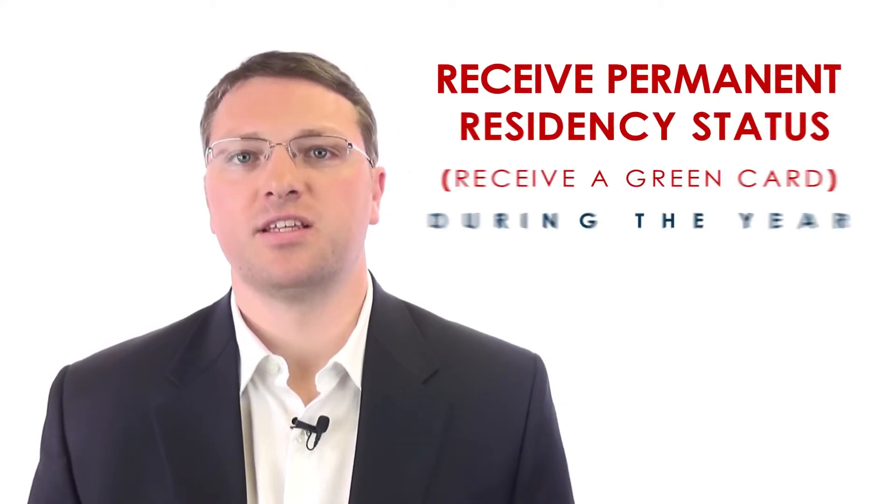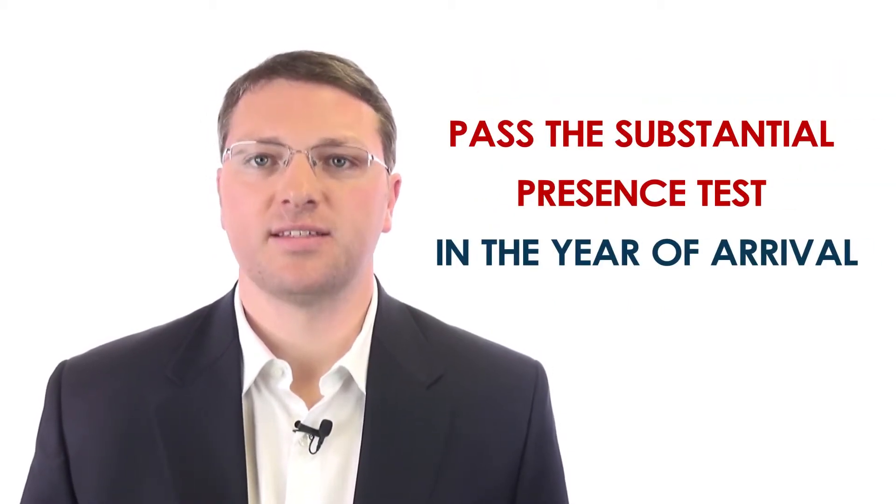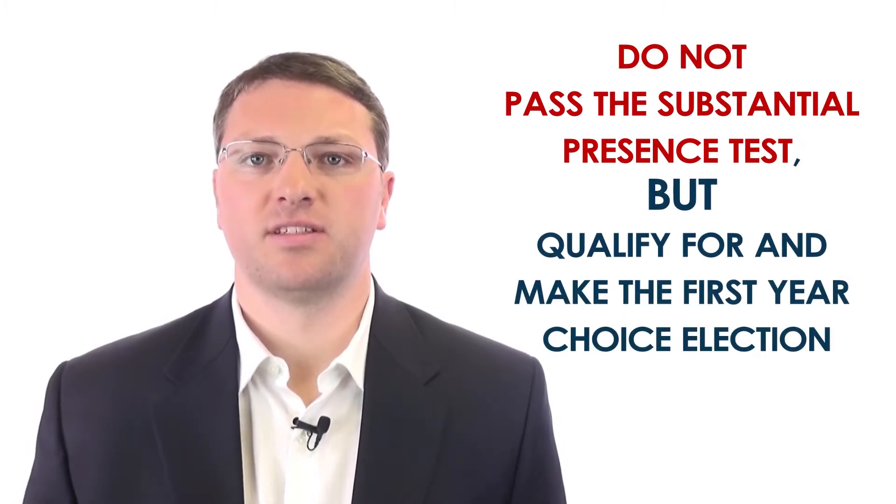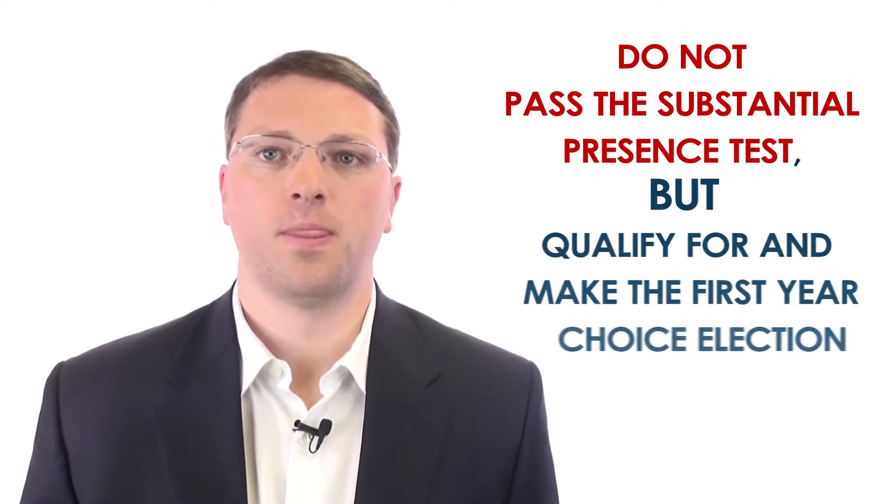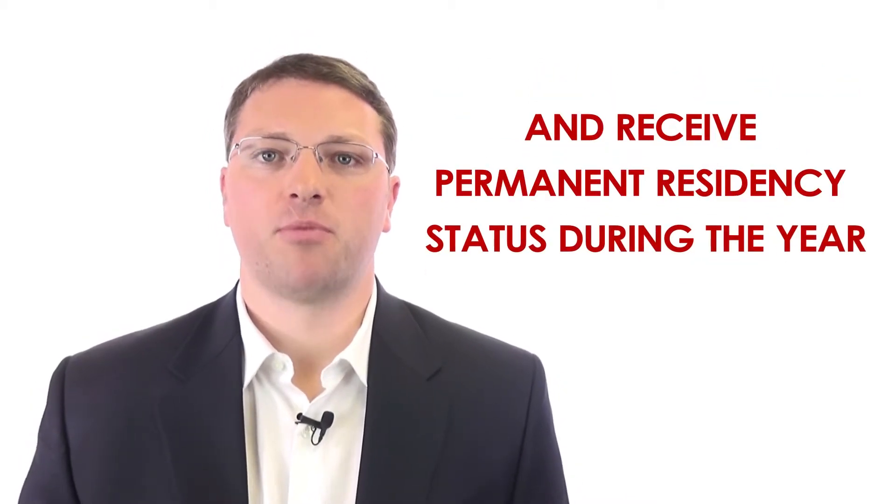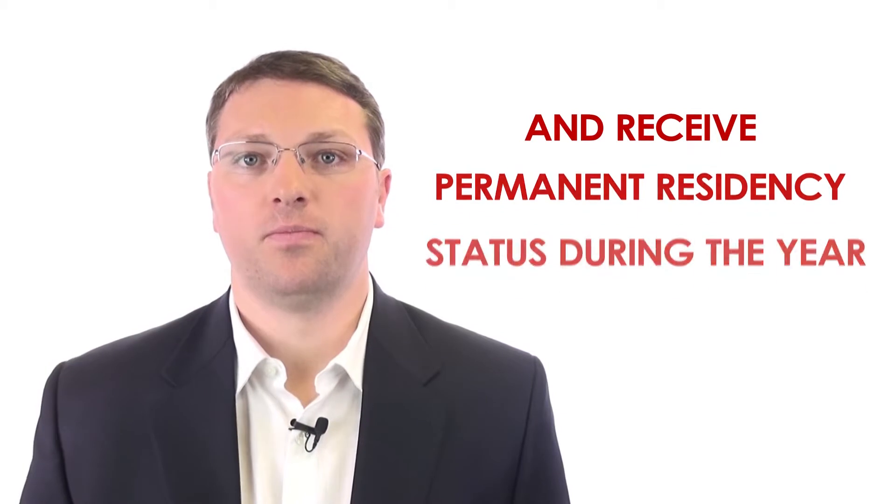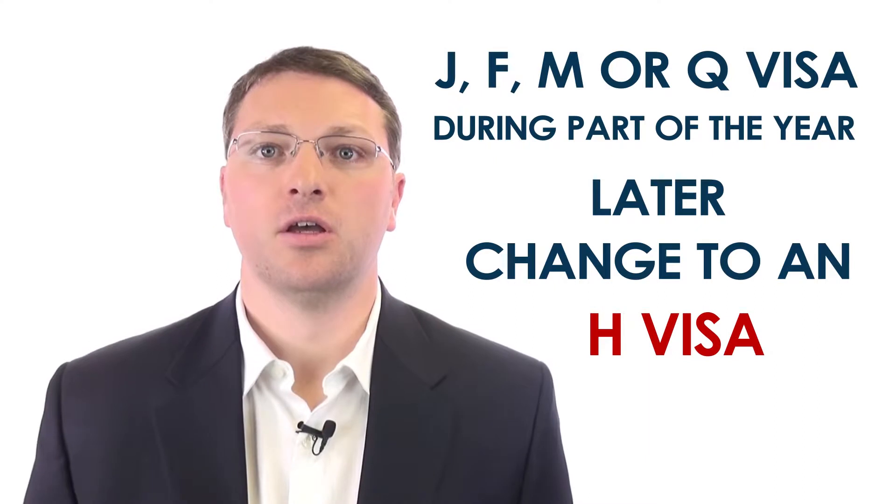Here are the most common circumstances of being dual status. When you enter the U.S. and receive permanent residency status or receive a green card during the year of arrival. When you enter the U.S. and pass the substantial presence test in the year of arrival. When you enter the U.S. and do not pass the substantial presence test but qualify for and make the first-year choice election. When you hold a J, F, M, or Q visa the first part of the year and receive permanent residency status during the year, or later change to an H visa or other status eligible to use the substantial presence test and pass the test.